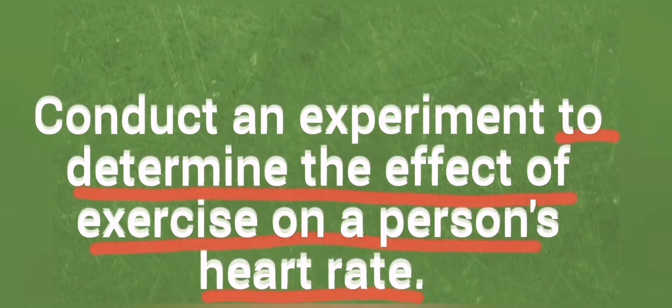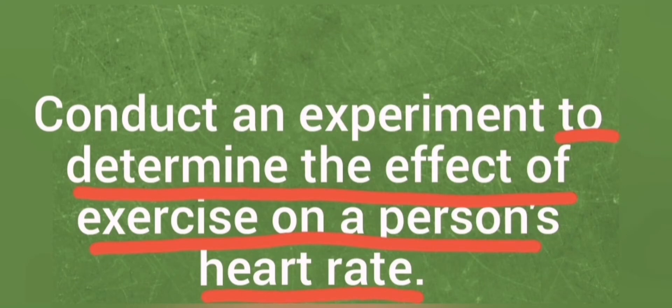You put the highlighter down where you see 'to' and you simply highlight till the end of the sentence. That pretty much is your aim. So in this case the aim is now underlined and it starts with 'to' - to determine the effect of exercise on a person's heart rate. So from here after I've got the aim I can use the same statement to figure out both the variables and the hypothesis.